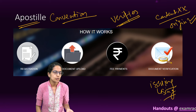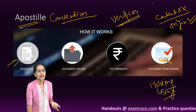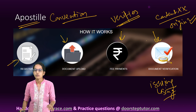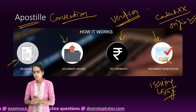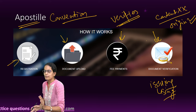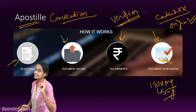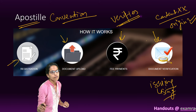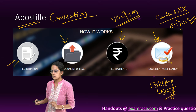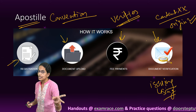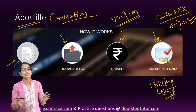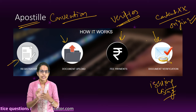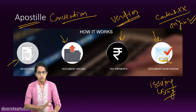To use e-Sanad, you register on the portal, upload the document, make the fee payment, and then verification of the documents is done. Most importantly, it certifies only the origin of the public document — not the content. This service is contactless, faceless, and paperless, making it a remarkable development for online attestation and apostille services.